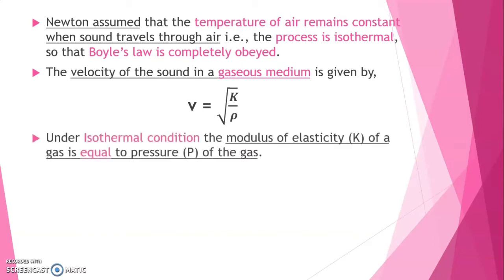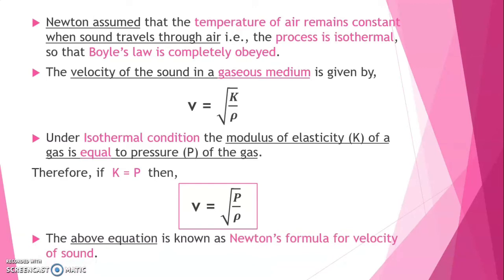Under isothermal condition, the modulus of elasticity K of a gas is equal to pressure P of the gas. Therefore, if K equals P, then the velocity becomes V equals root over P by rho. The above equation is known as Newton's formula for velocity of sound.